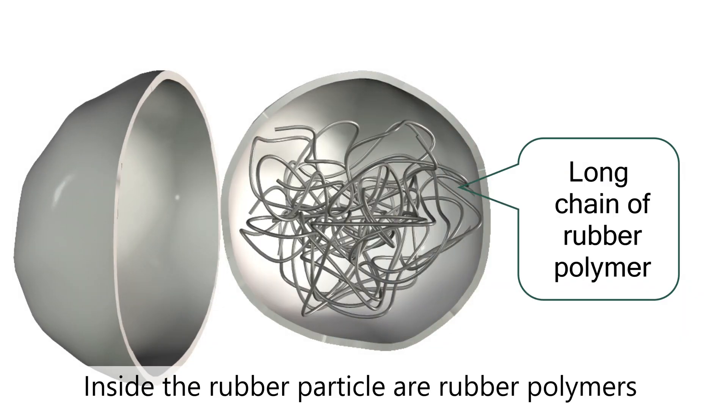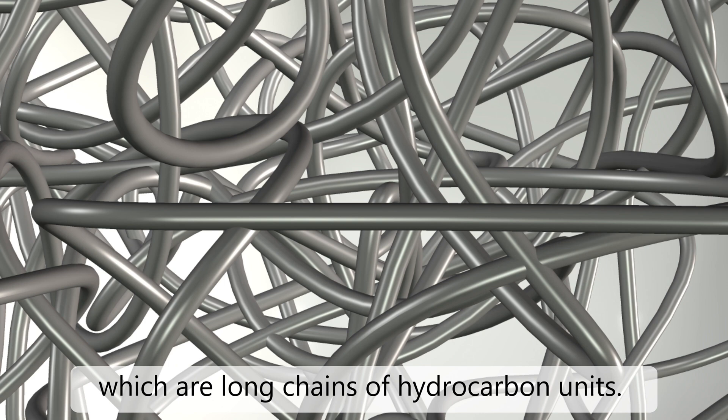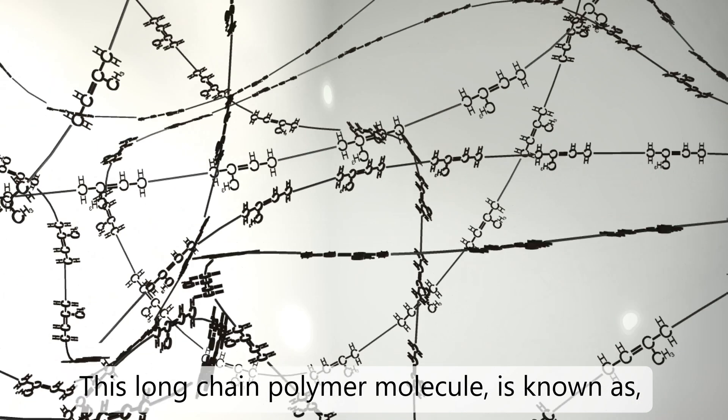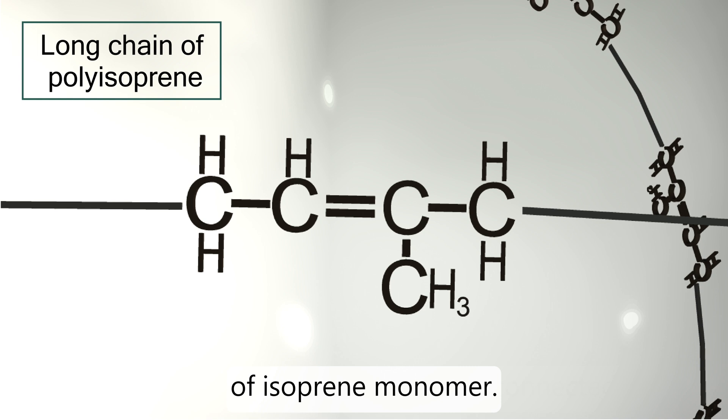Inside the rubber particle are rubber polymers, which are long chains of hydrocarbon units. This long chain polymer molecule is known as polyisoprene, consisting of thousands of interconnected units of isoprene monomer.